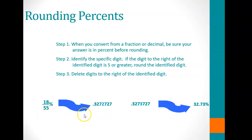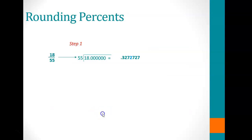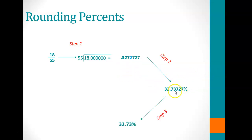To recap: dividing 55 into 18 gives 0.3272727. We're rounding to the fourth decimal place, so we look at the number behind it — the 7. Since 7 is 5 or higher, we round up, giving 0.3273. Moving the decimal two spaces to the right converts it to 32.73%.